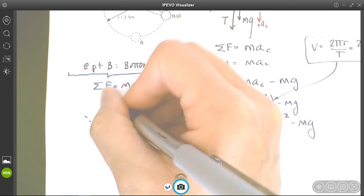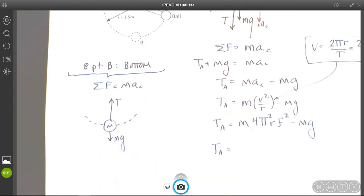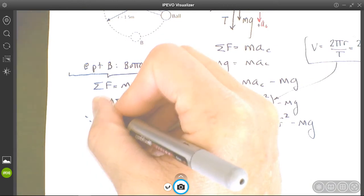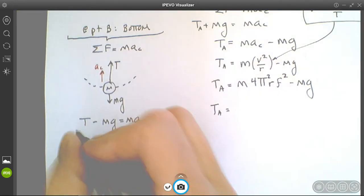Tension is pulling up, but gravity is pulling down. Which way is it accelerating? Centripetally, towards the center, so that's our positive direction. So when we write out our formula, it's tension minus mg equals m ac.